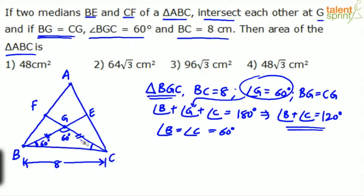So if you consider now, overall, this triangle BGC is an equilateral triangle. All three angles are equal. So we can conclude that BGC is an equilateral triangle. How do you get the area of an equilateral triangle? Area of triangle BGC equals root 3 by 4 A squared.